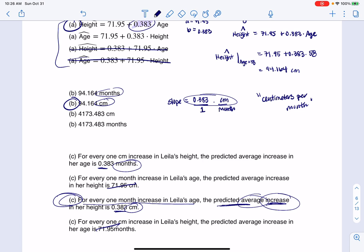It's an average because it is a slope. Slopes are average rates of change. And it's predicted because that's the whole point of regression. We're just trying to predict things. So we're not saying that Layla grows exactly 0.383 centimeters per month. But if you average it out over the first few months of her life, it's about 0.383 centimeters per month.